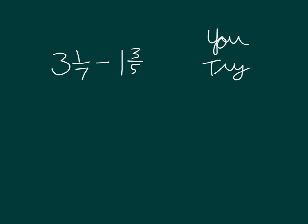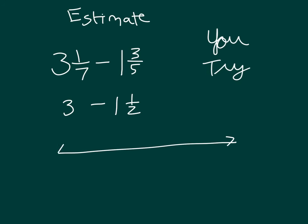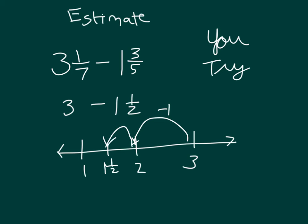Here's another one for you to try. Use an estimate and also use a number line to show how you figured out the difference. Pause the video while you do your work. Did you estimate 3 and 1 sevenths as 3? And 1 and 3 fifths is very close to 1 and 1 half. So you'd work through 3 minus 1 and 1 half — starting at 3, subtracting 1 first, then subtracting 1 half — giving an estimate of 1 and 1 half.